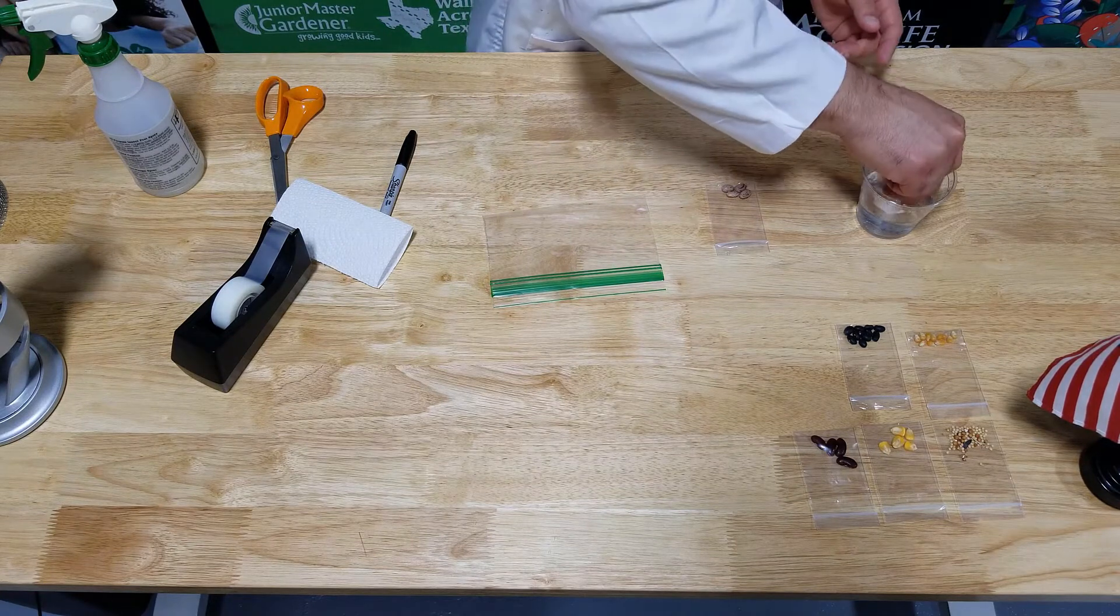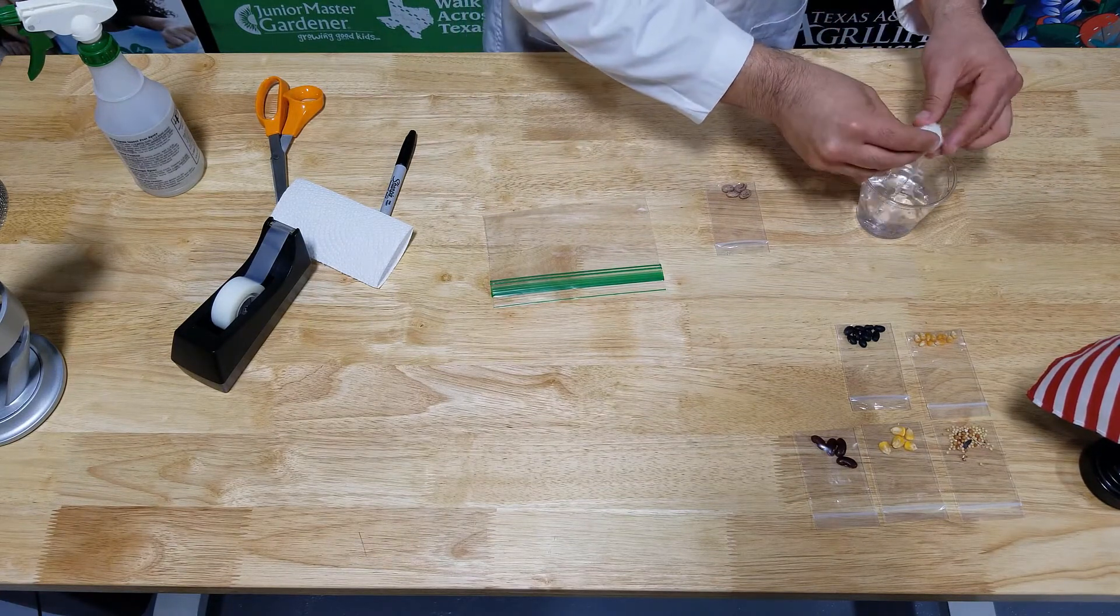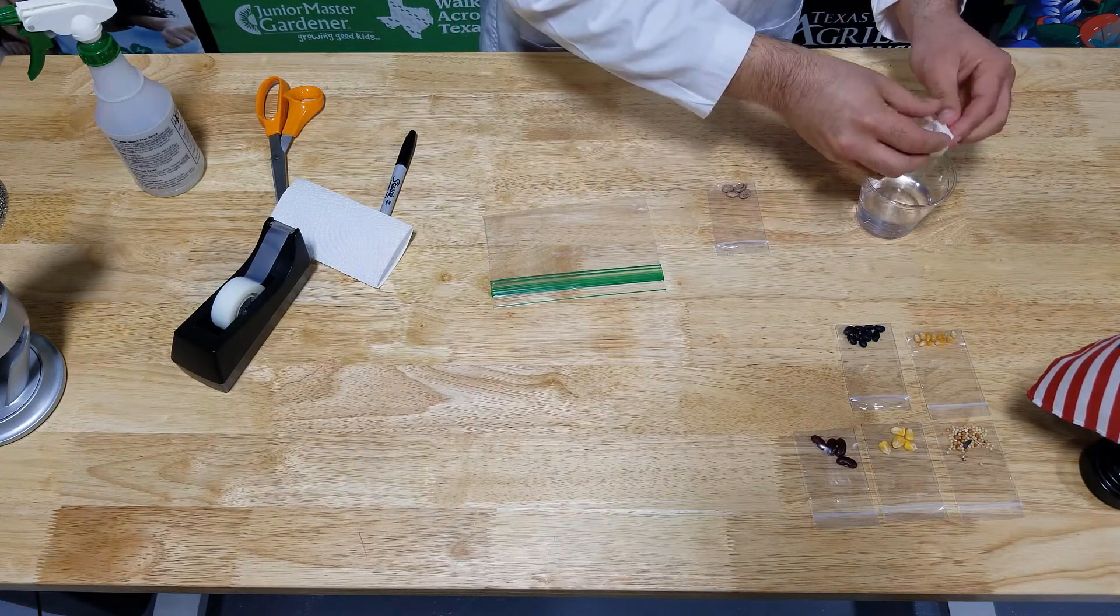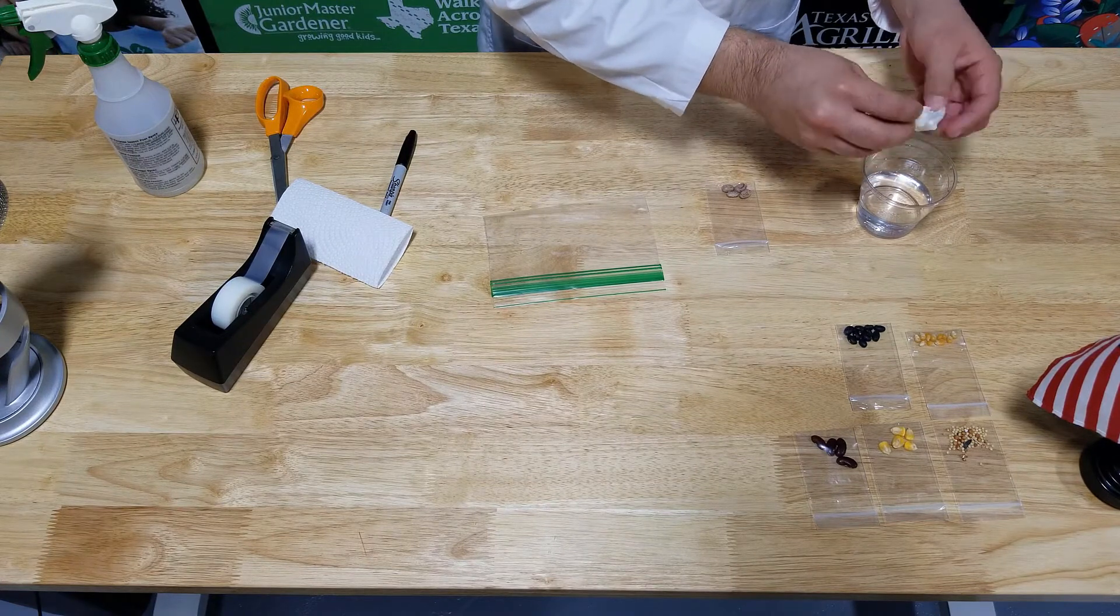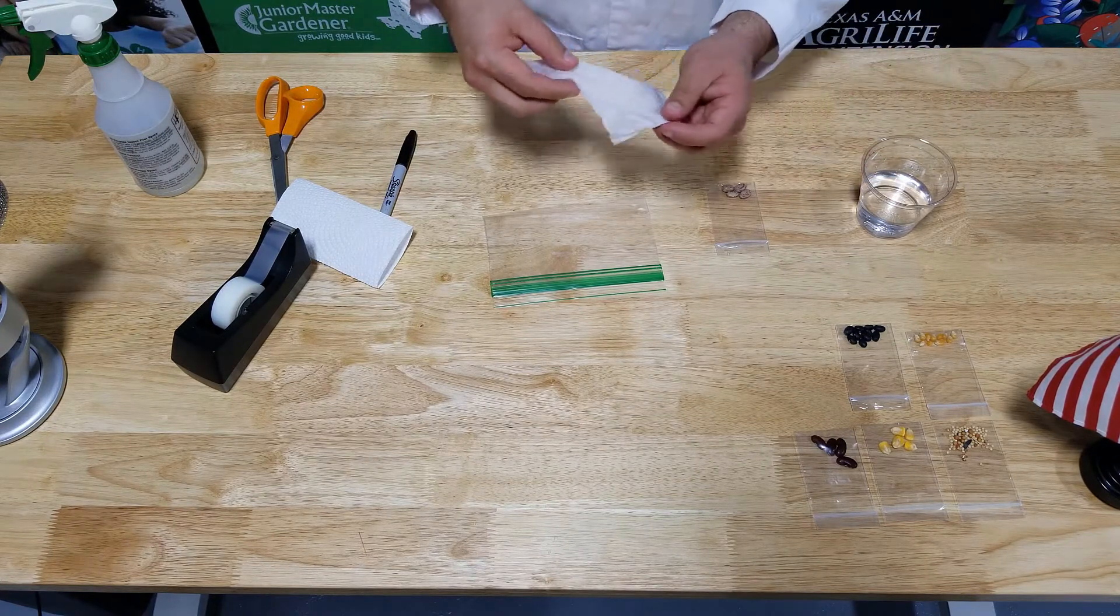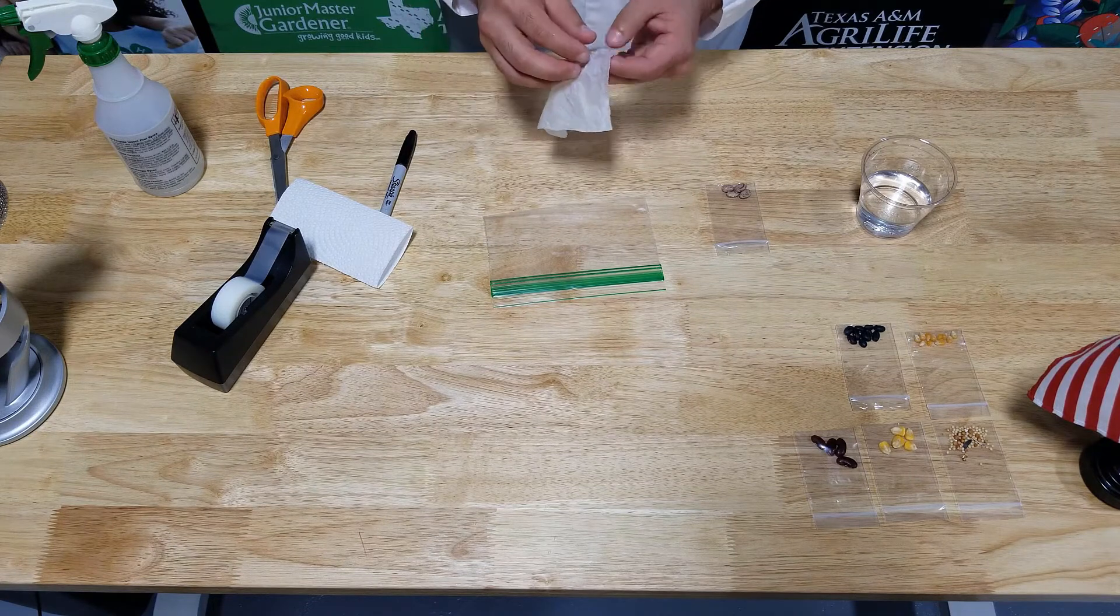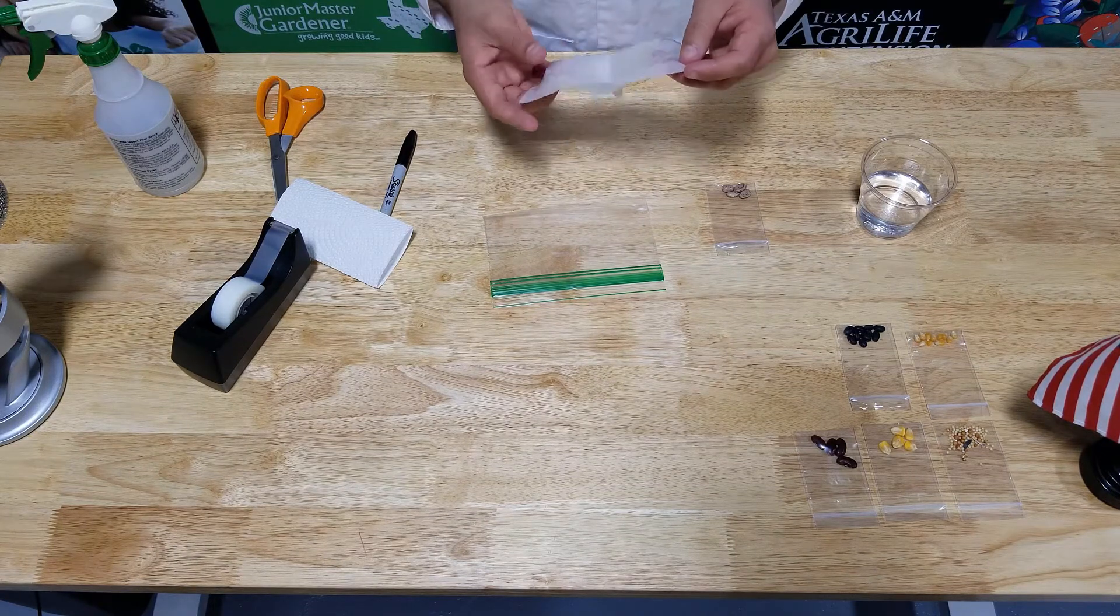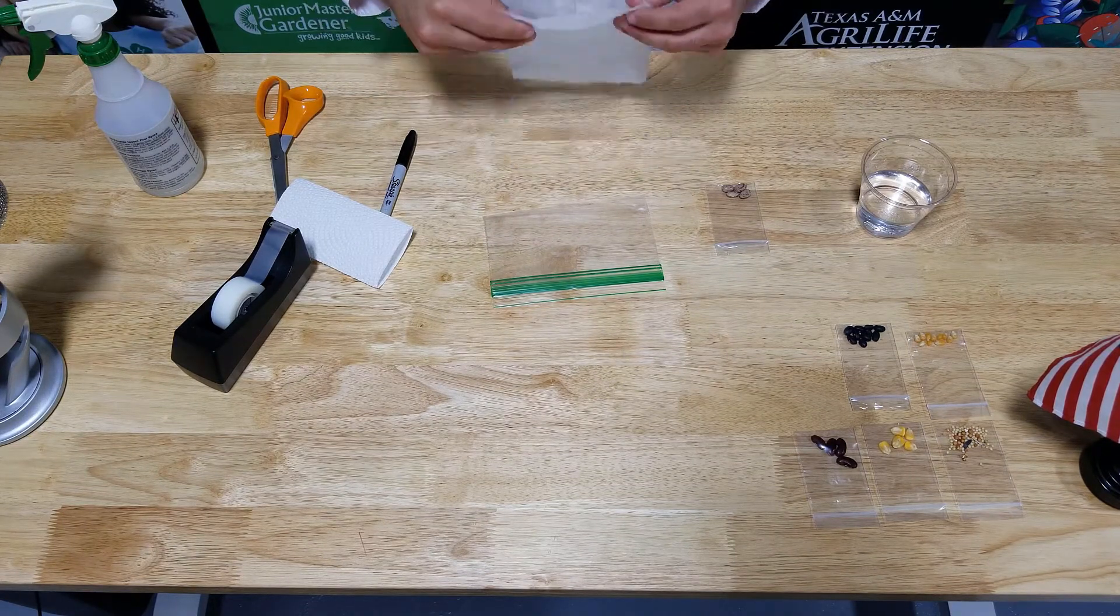So our paper towel will fit in perfectly with our bag. We're going to take some water and we're going to soak our paper towel. Now I'm going to wring out some of that water. I don't want it to be dripping wet. I just want it to be soaked perfectly where we don't have any water dripping. And I'm going to open up that paper towel. Lay it out flat.